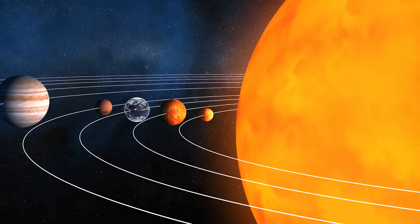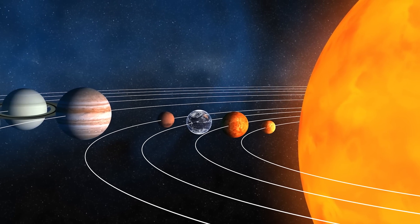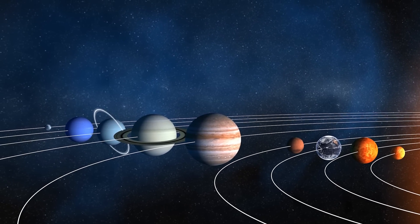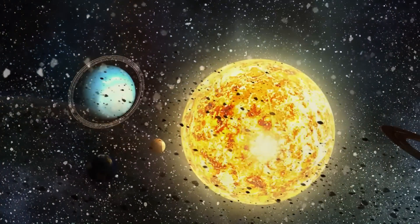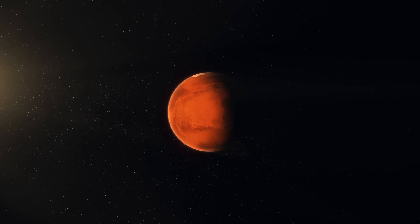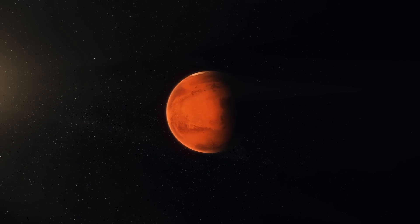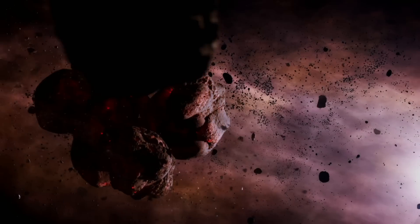We tend to think of our solar system as kind of always being the way it was, but it was actually very chaotic and so much of how it is is just random chance. Like the size of Mars is largely due to the orbits of Saturn and Jupiter. Mercury, Earth,